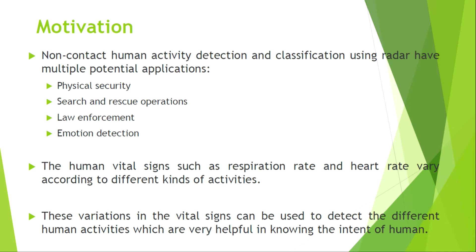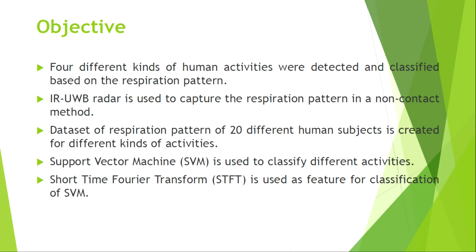Human vital signs such as respiration and heart rate vary according to different kinds of activities, so we can tell what the person is doing. The vital signs can be used to detect different human activities, which is helpful in knowing the intent of a human. In this work we used 4 kinds of activities to detect what activity is being performed according to the respiration pattern.